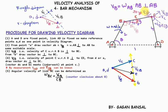Now suppose we have to calculate the angular velocity of link BC. We know that velocity of C with respect to B is vcb, which has been determined by measurement of the velocity diagram given by vector bc. So omega_BC multiplied by CB gives velocity of C with respect to B. That way, angular velocity of link BC can be calculated, and its direction will be counter-clockwise about B.